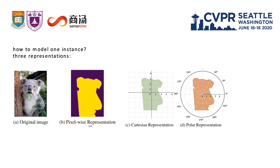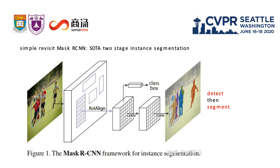How to model one instance? We give three representations. The first one is pixel-wise representation, which is widely used in traditional work such as Mask RCNN. Figure C and D shows that detected contours can also do instance segmentation. In this work, we design an instance segmentation method based on the polar representation.